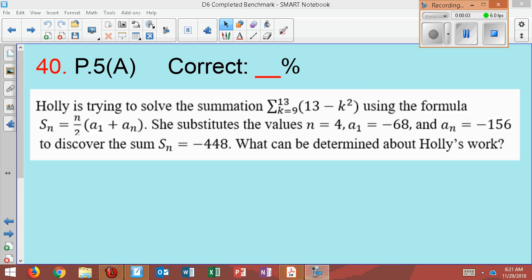Holly is trying to solve the summation sigma from k equals 9 up to 13 of 13 minus k squared, using the formula sum of n terms equals n over 2 times a₁ plus aₙ. She substitutes the values n equals 4, a₁ is negative 68, and aₙ is negative 156, to discover the sum being negative 448. What can be determined about Holly's work?